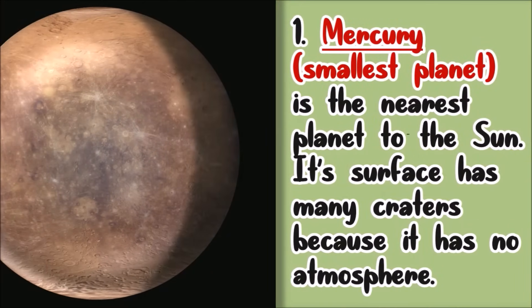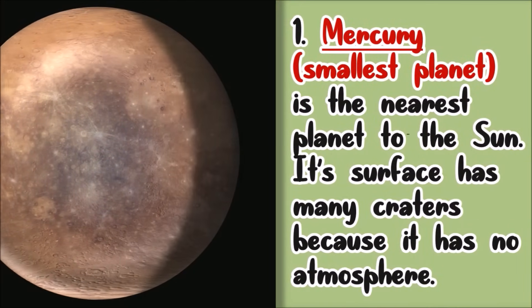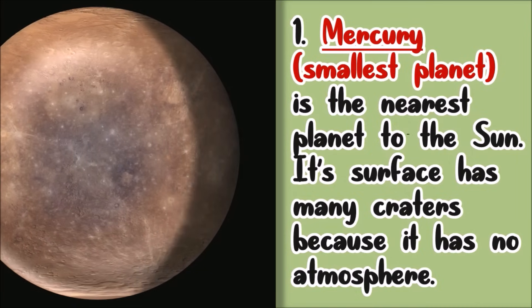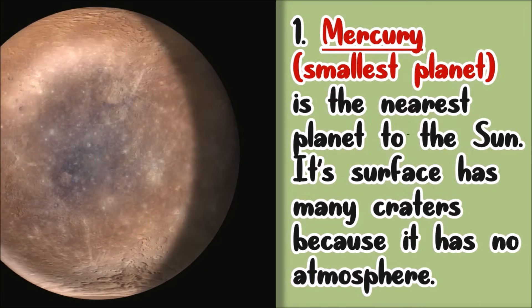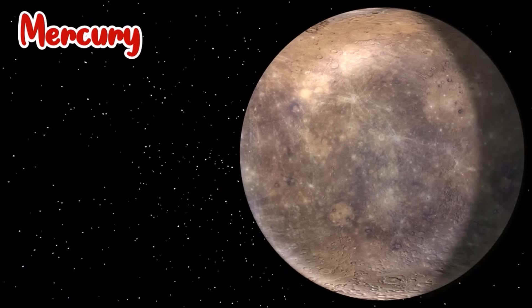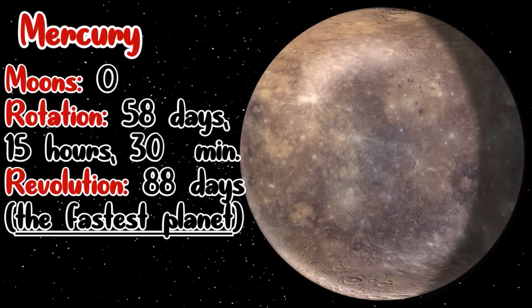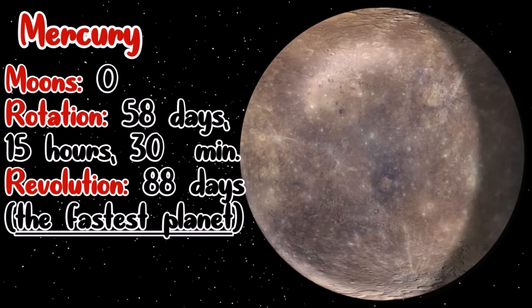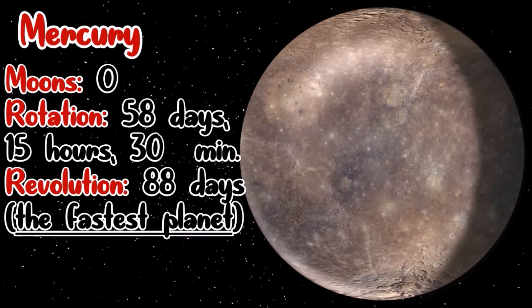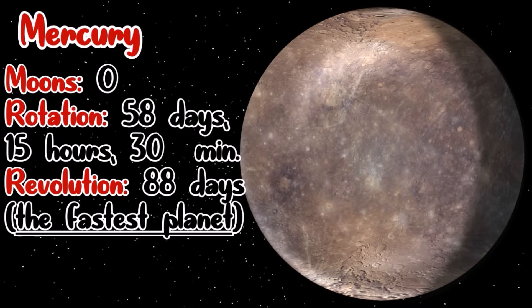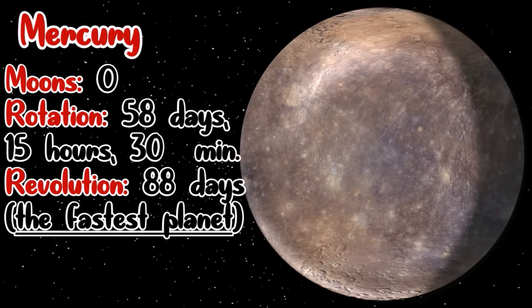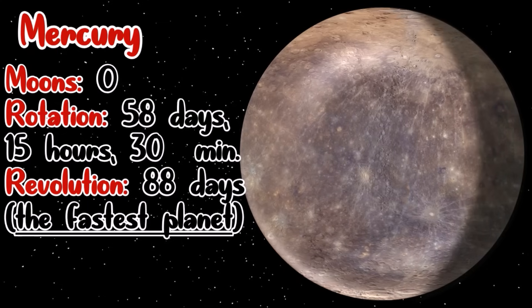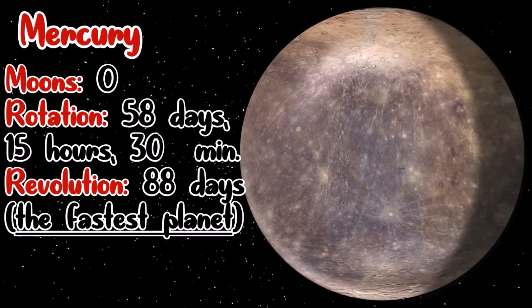Mercury is the nearest planet to the Sun. Its surface has many craters because it has no atmosphere. Mercury has no moons. One rotation of Mercury is equivalent to 58 days, 15 hours, and 30 minutes. However, it requires 88 days in one revolution around the Sun. That is why it is considered as the fastest planet.